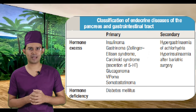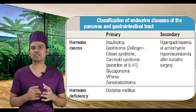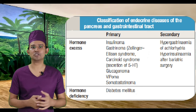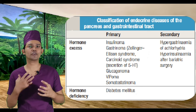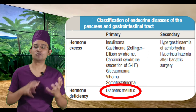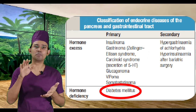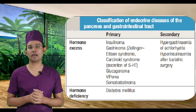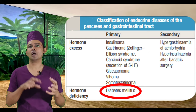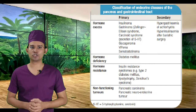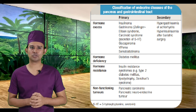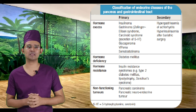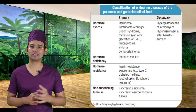Under hormone deficiency, we have diabetes mellitus. When treating diabetes mellitus with insulin and sulfonylureas — antidiabetic drugs — giving these two drugs inappropriately can cause blood glucose levels to fall, which is why we are discussing spontaneous hypoglycemia today. Hormone resistance includes insulin resistance syndrome, i.e., type 2 diabetes mellitus, and non-functioning tumors include pancreatic carcinoma and pancreatic neuroendocrine tumors.